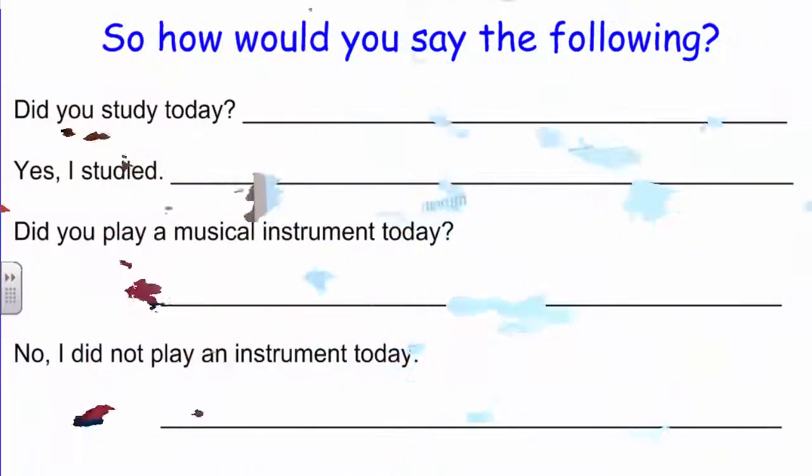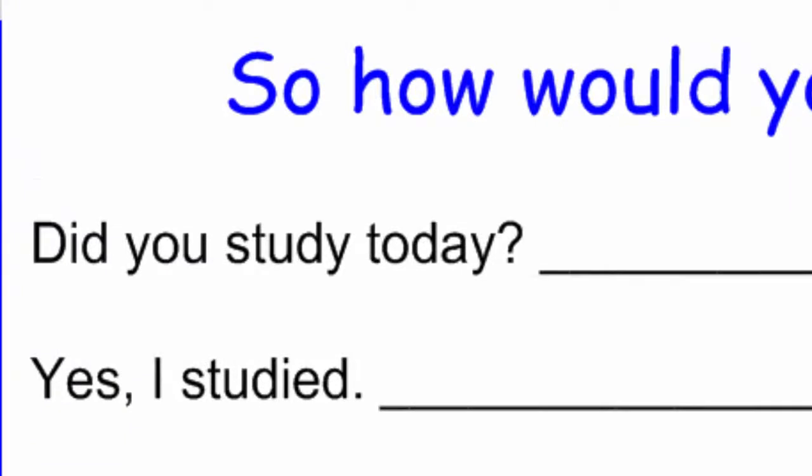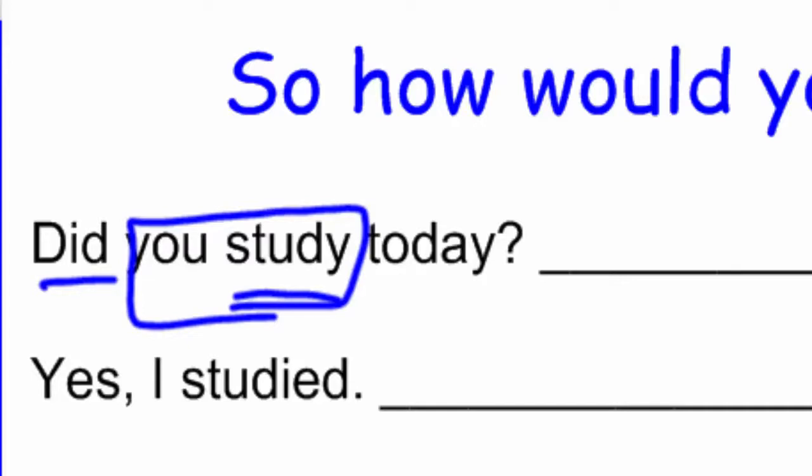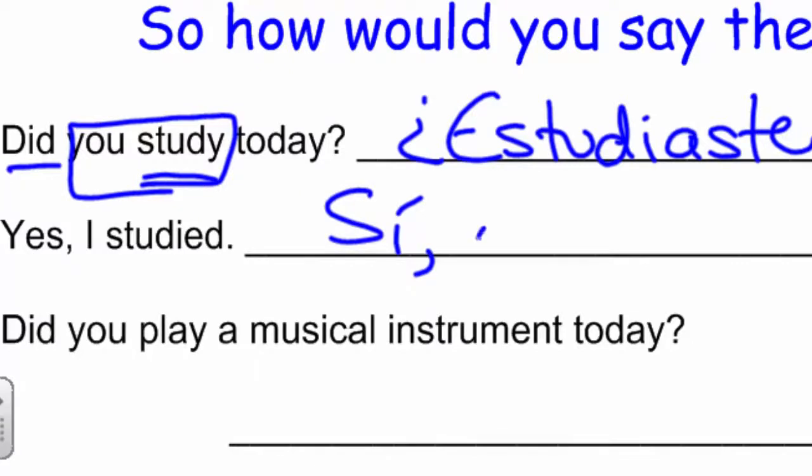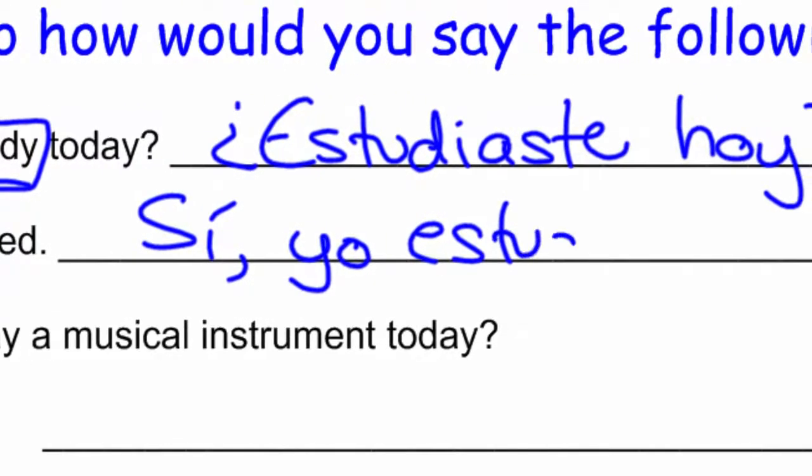Did you study today? Well, estudiar is to study. We don't have to use... In Spanish, we don't have to use two verbs. We just use one. We're just going to use the verb study. So basically, you studied today. Check your notes. Check the ending. AR. Tú form. Preterite. What would it be? You got it? Estudiaste? Hoy? Estudiaste hoy? Did you study today? Yes, I study. Check your notes. What would that be? Sí. I'll throw in the yo just for fun. Sí. Estudié. Punto.